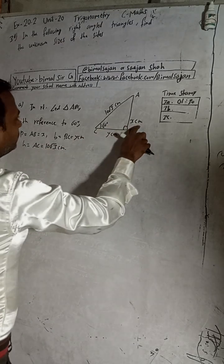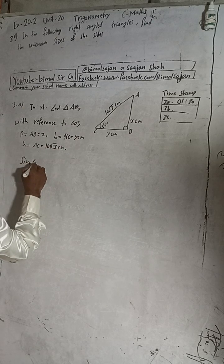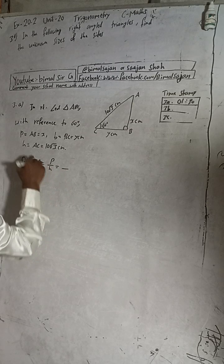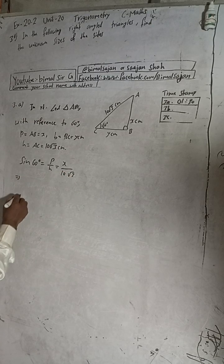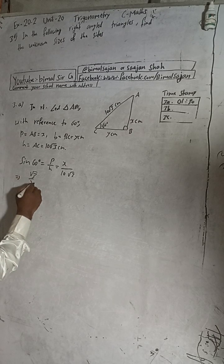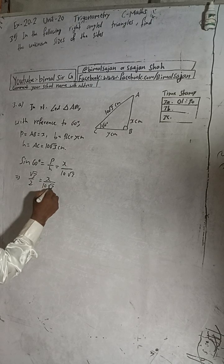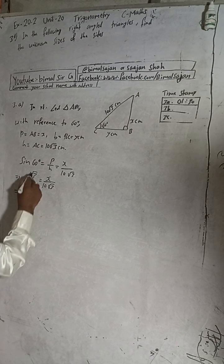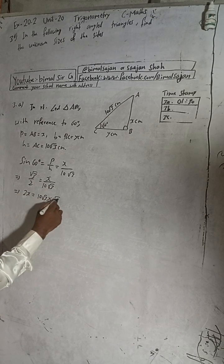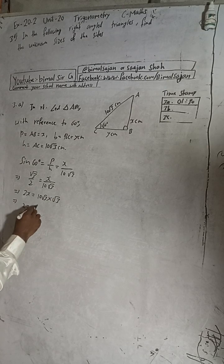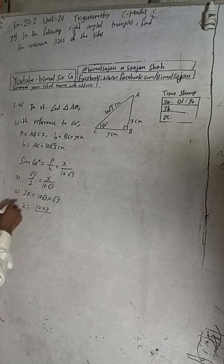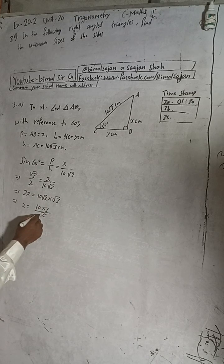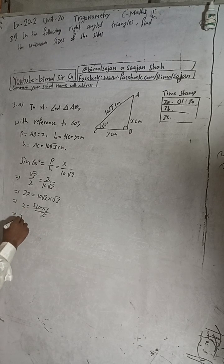To find x, we use the relation perpendicular over hypotenuse, which gives sine 60°. So sin 60° = x / (10√3). The value of sin 60° is √3/2, so √3/2 = x / (10√3). Cross-multiplying: 2x = 10√3 × √3 = 10 × 3 = 30. Therefore x = 15 cm.